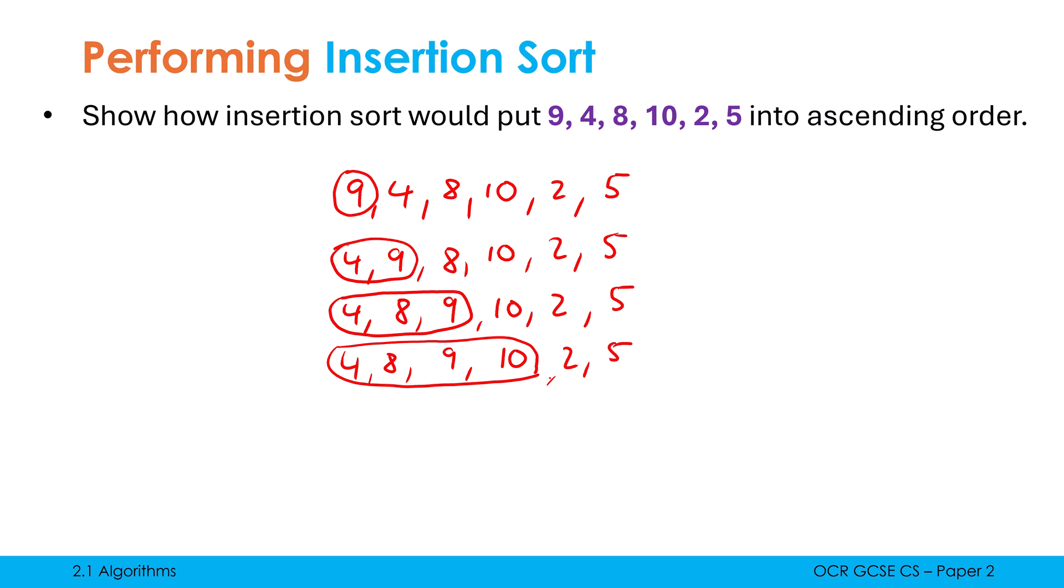Two is another example at the extreme, where we're sort of going right to the other end. This time we're going, is two bigger than ten? No. Is it bigger than nine? No. Is it bigger than eight? No. Is it bigger than four? No. So therefore, because I've got no other items, it must go at the front. I've reached the end of my sorted part.